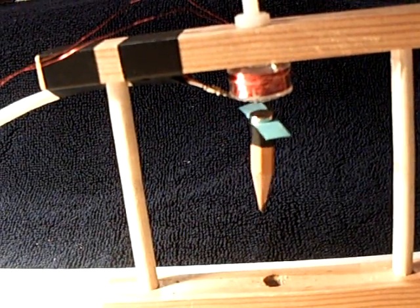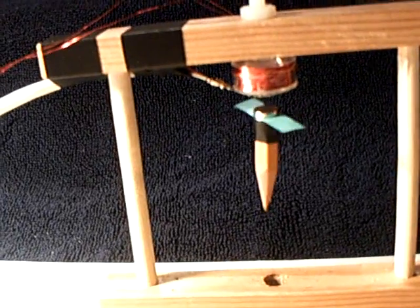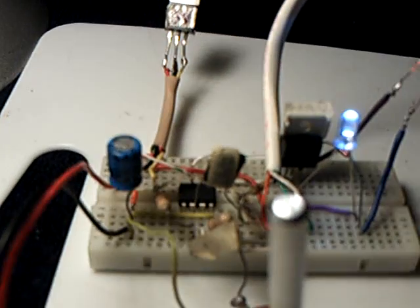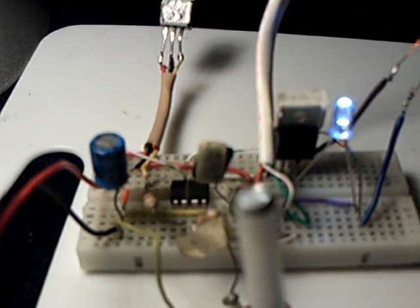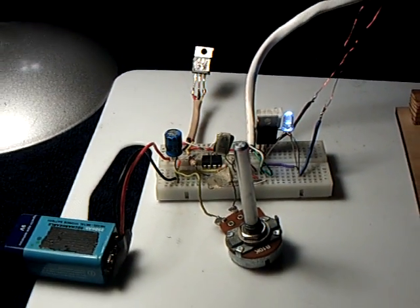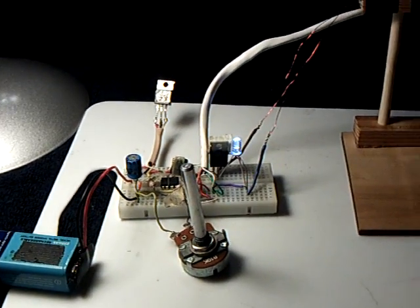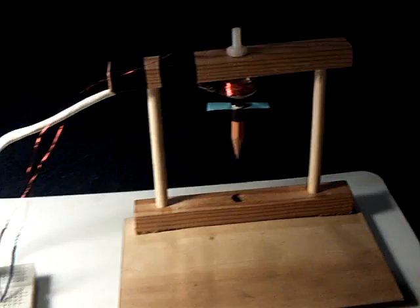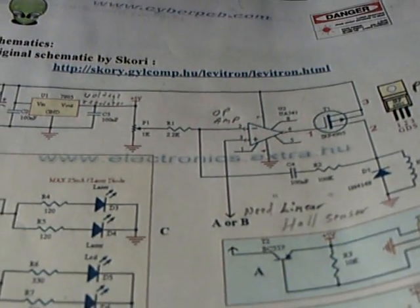It is a hall sensor levitation device using a hall sensor with an op amp and a p-channel MOSFET and a voltage regulator. I had tried to do this project a few years ago and failed miserably. And this is the project here. It's a homemade Levitron.